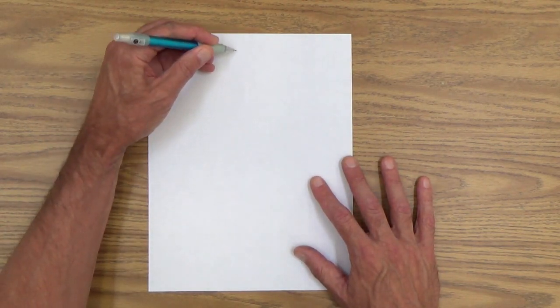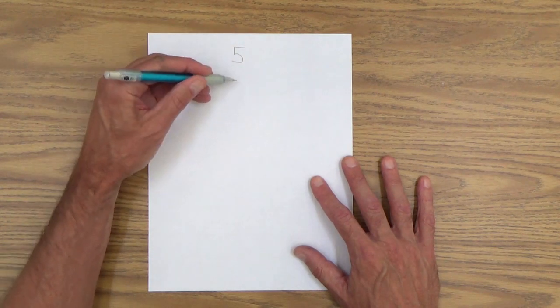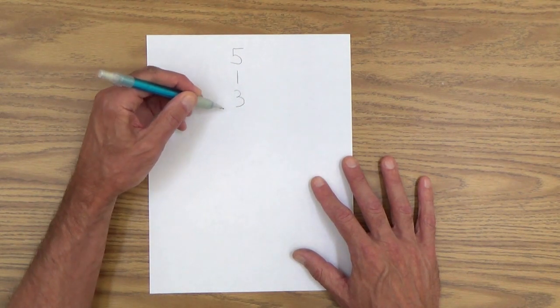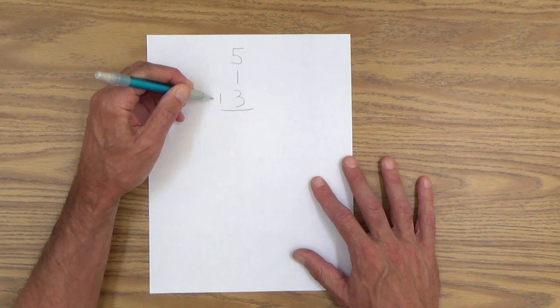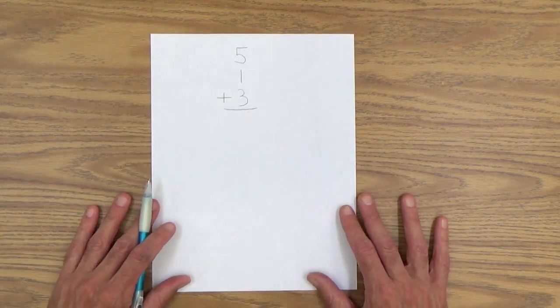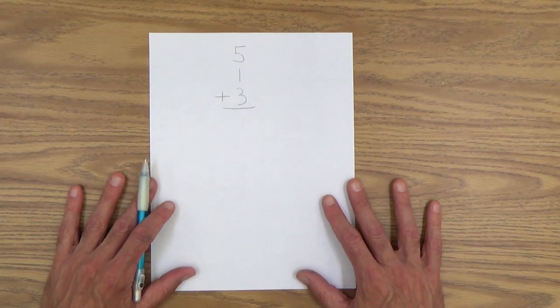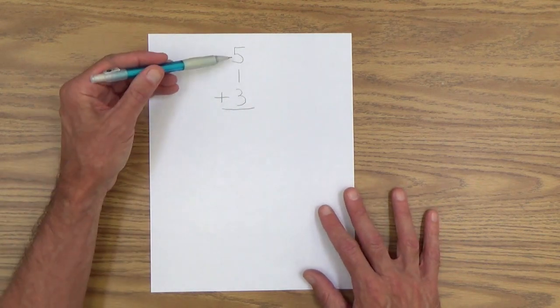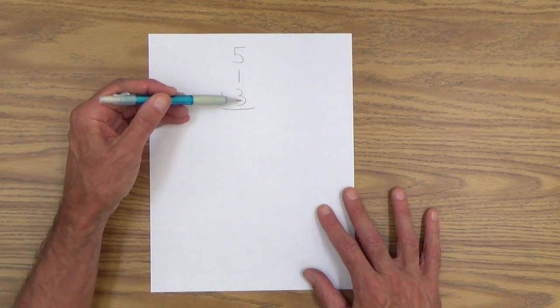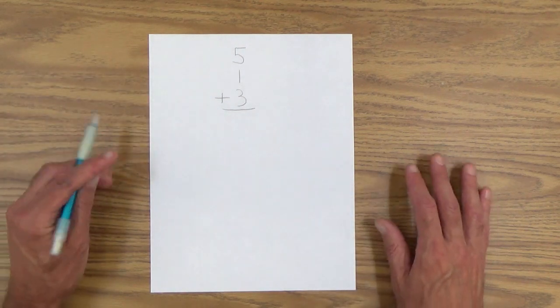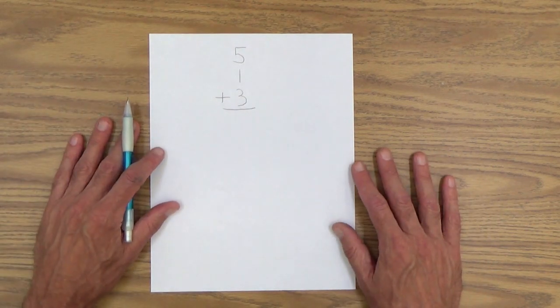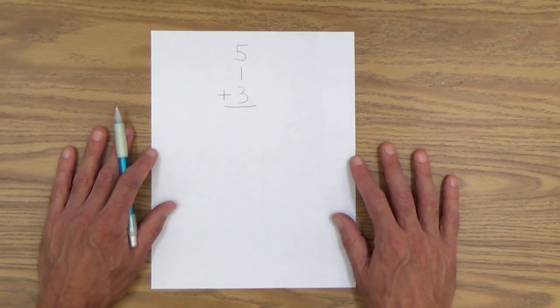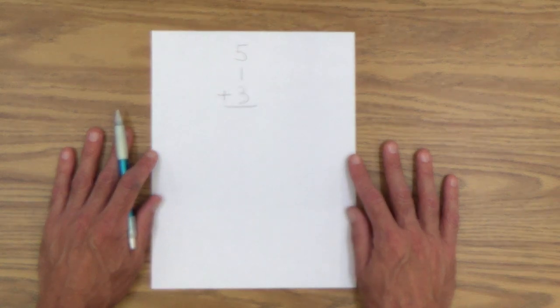But we'll start out with just three for now. So, let's start out with this problem. Five plus one plus three equals how many. And you can show your child how to read this problem, even though there's only one addition sign there. It's read like this. Five plus one plus three equals how many.